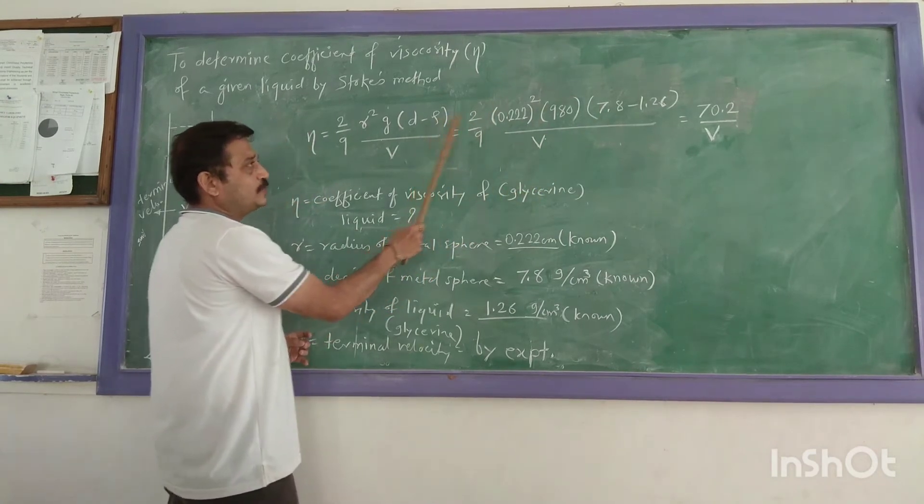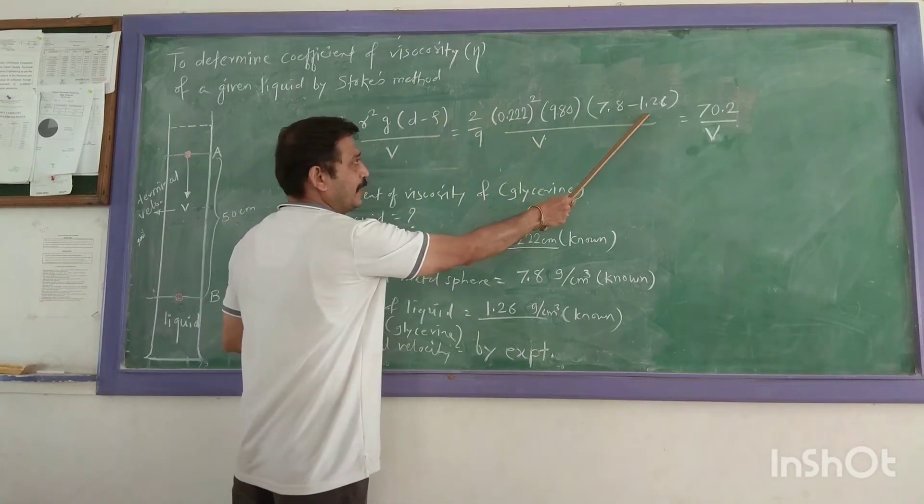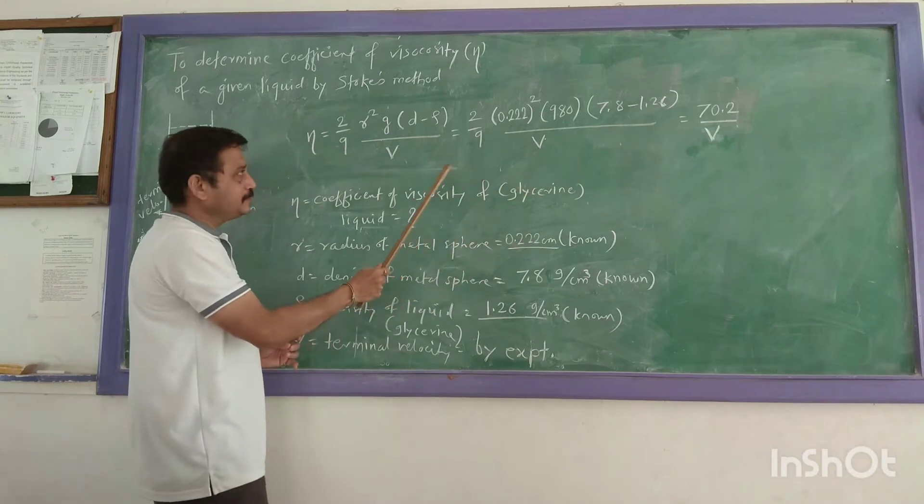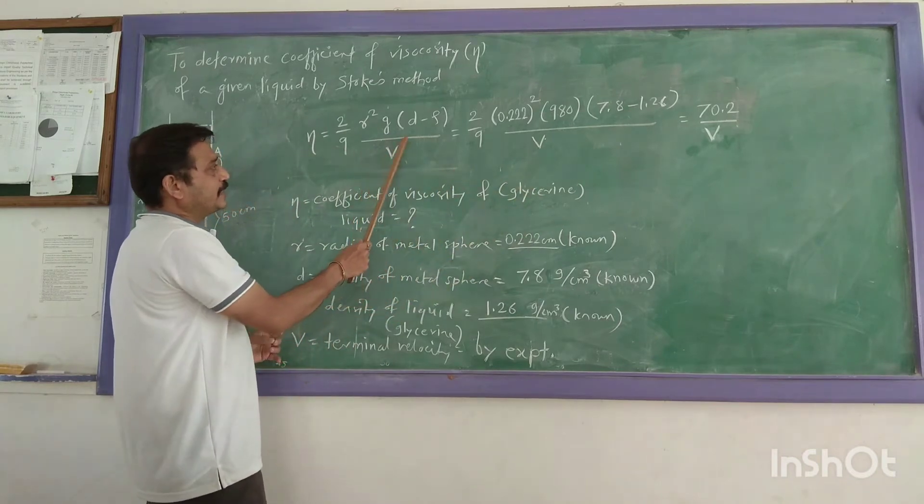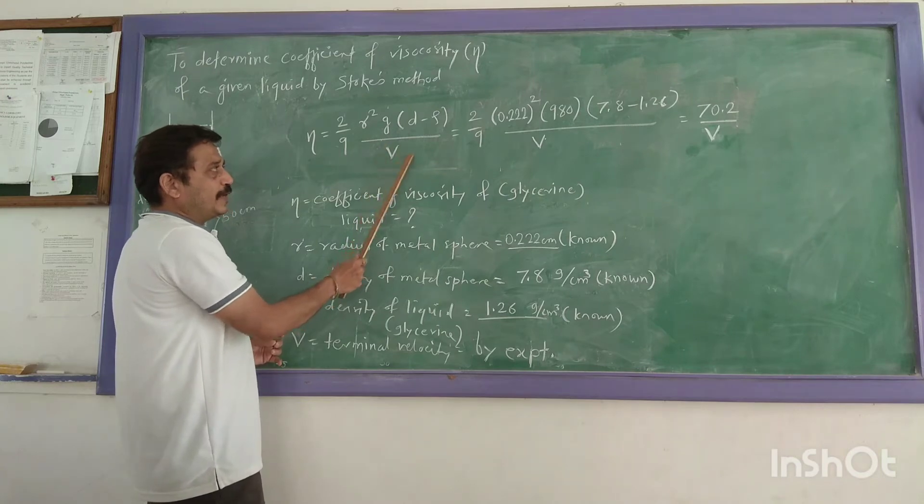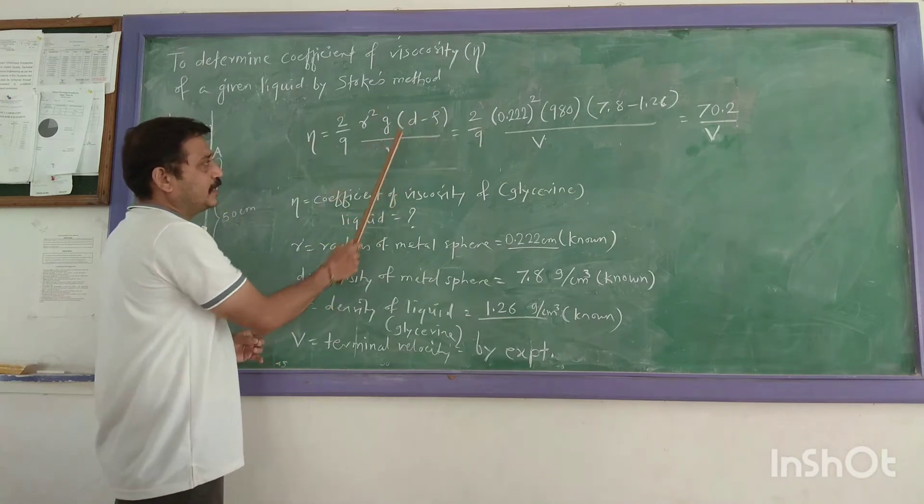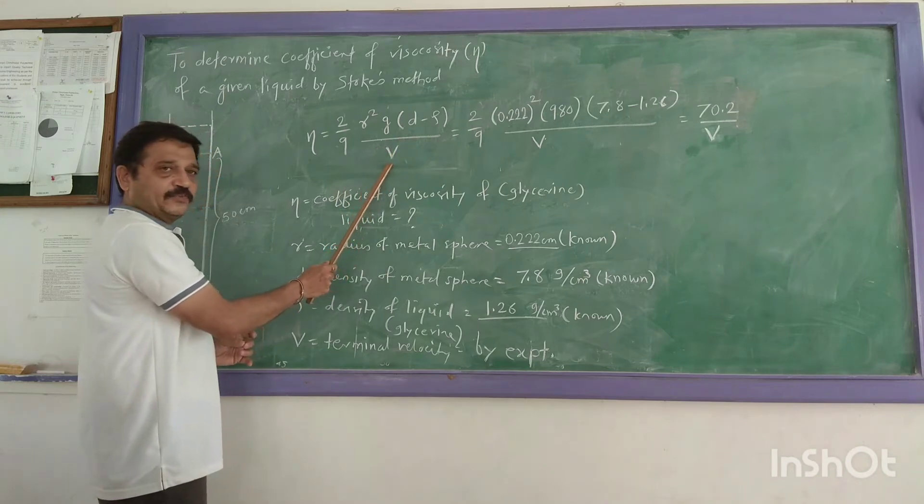ρ is the density of the liquid, which is also known to us. The liquid used here is glycerin. And V is the terminal velocity. That only we have to find out. In this formula, everything is known to us. Only V is unknown—that is velocity.